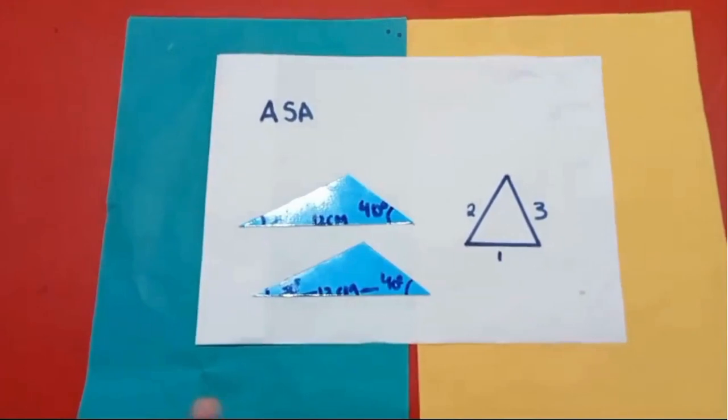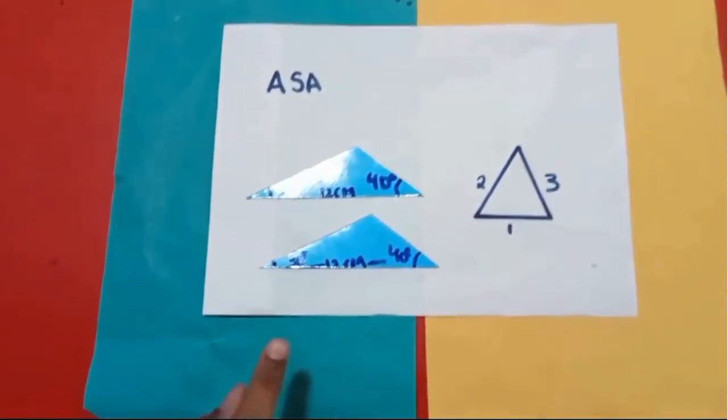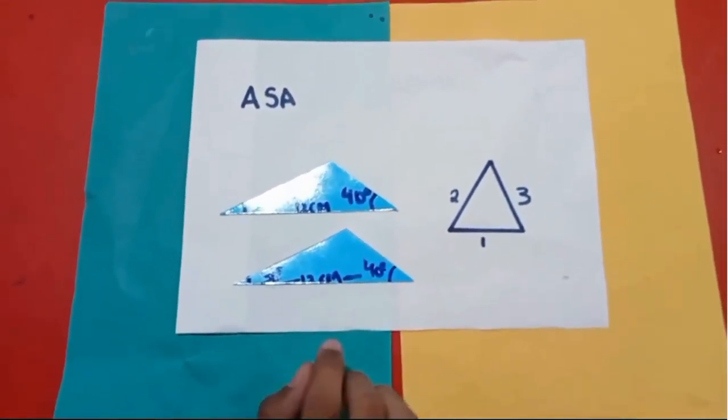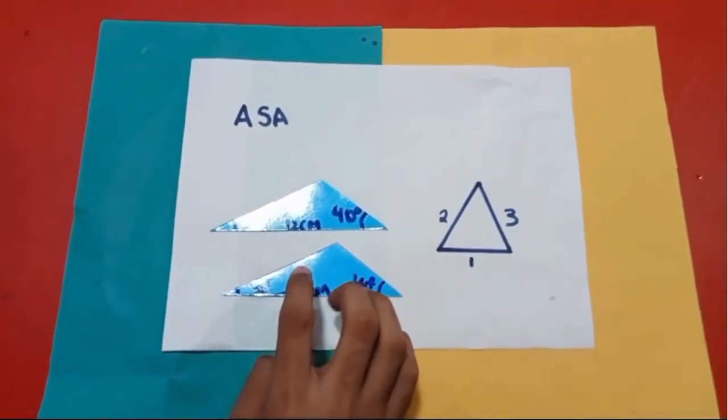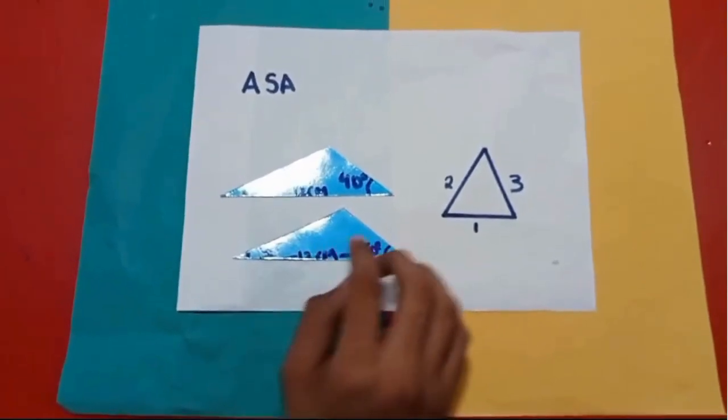This criteria is ASA, angle-side-angle. Now, we will check whether these two triangles are congruent or not by using the ASA method.